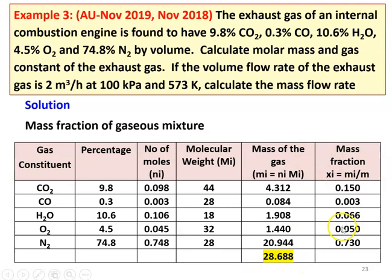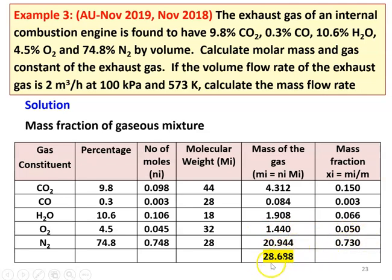Then we calculate the mass fraction. Mass fraction equals the mass of the individual gas divided by the total mass of the mixture. So: 4.312 divided by 28.688 equals 0.105; 0.084 divided by 28.688 equals 0.003; 1.908 divided by 28.688 equals 0.066; 1.44 divided by 28.688 equals 0.045; and 20.944 divided by 28.688 equals 0.73. These are the mass fractions of the individual gases.